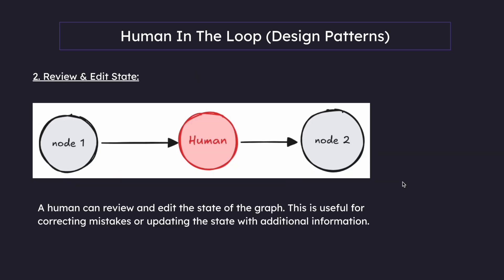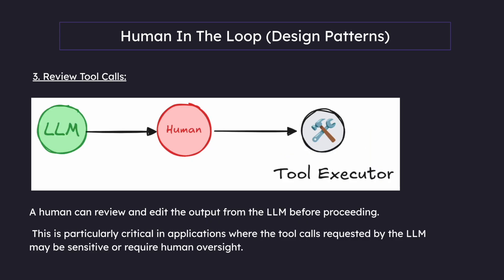Let's look at another one: review and edit state. In this case, a human can review and edit the state of the graph, which is useful for correcting mistakes or updating the state with additional information. Another use case is reviewing tool calls — a human can review and edit the output of the LLM before processing. This is particularly critical in applications where the tool calls requested by the LLM may be sensitive or require human oversight.